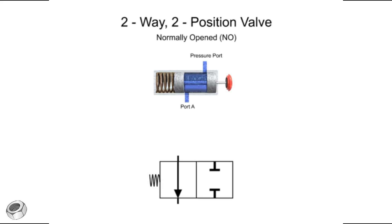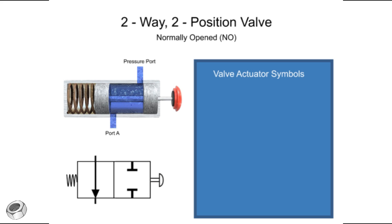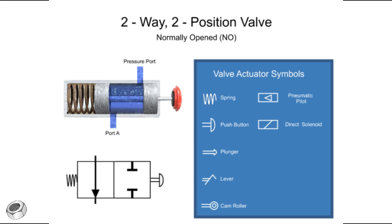Actuators used to change valve positions can be mechanical, pneumatic pilot, or electric solenoid. To complete the diagram, the primary actuator symbol is placed on the other end of the graphic symbol — in this case, the actuator is a push button. Mechanical actuators change valve positions with springs, push buttons, plungers, levers, and cam rollers. Pneumatic pilots change valve position with a pressurized air signal. Electric solenoids that directly move the valve element are called direct solenoids, while those that open small pilot valves and allow pressurized air to move the valve element are called solenoid controlled pilot operators.